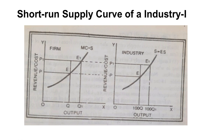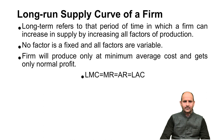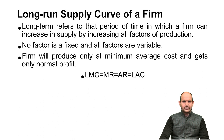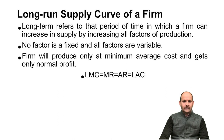Now we will discuss the long-run supply curve of a firm. The long run refers to the period of time in which a firm can increase supply by increasing all factors of production. In the short run, only variable factors can be changed, but in the long run all factors are variable — no factor is fixed. So the firm can change all factors of production.